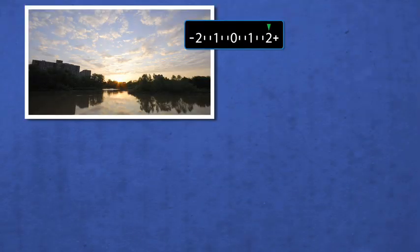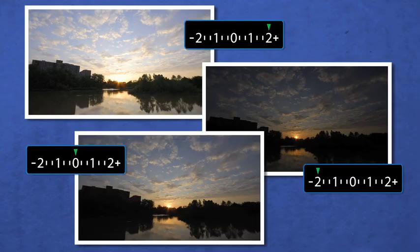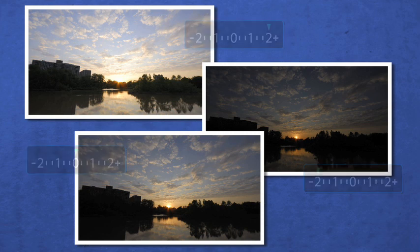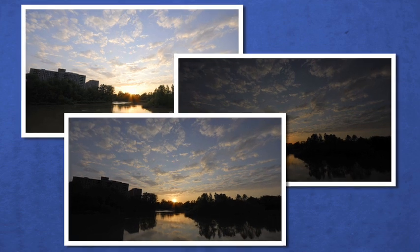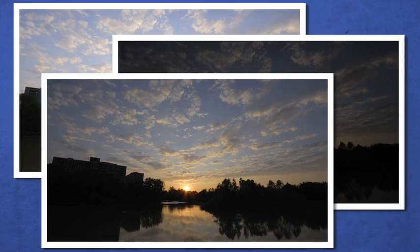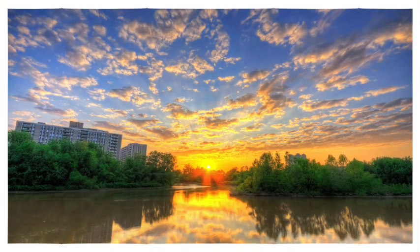Here's an example of bracketed photos. You can see from these three brackets that each one preserves an important part of the overall dynamic range of the scene. Although the under and overexposed photos aren't pretty to look at on their own, the HDR application uses the information from all the brackets to sense what each part of the scene actually looks like.